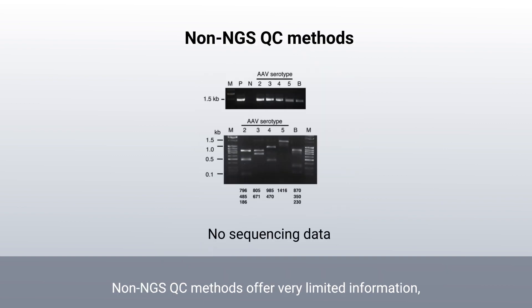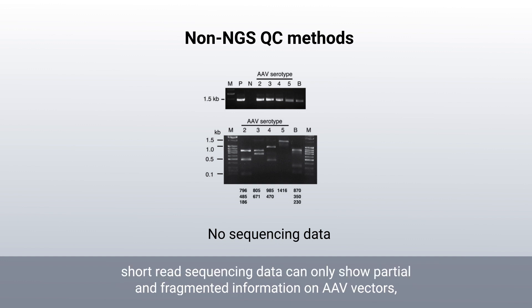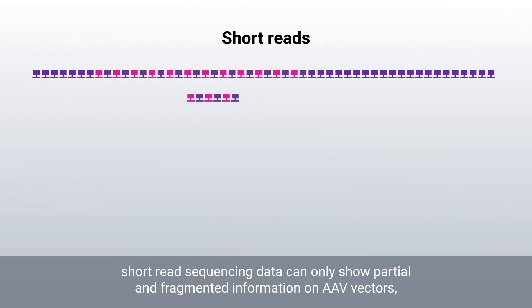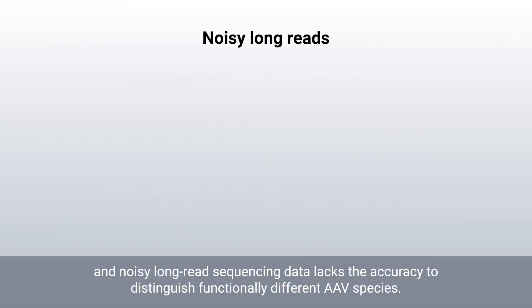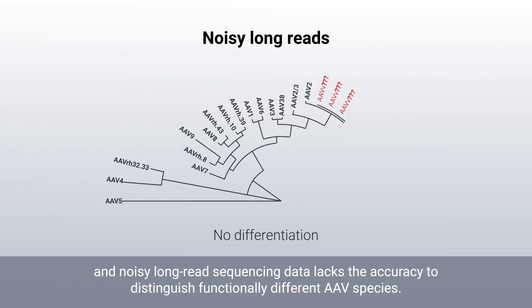Non-NGS QC methods offer very limited information. Short-read sequencing data can only show partial and fragmented information on AAV vectors. And noisy long-read sequencing data lacks the accuracy to distinguish functionally different AAV species.